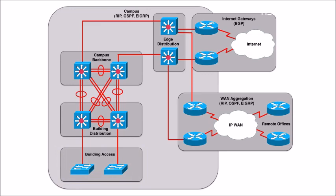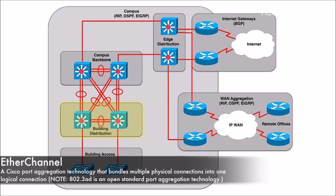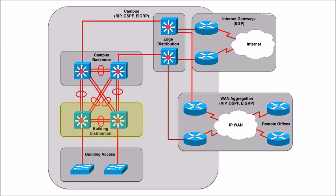These building access switches connect up to a building distribution layer, which is also part of the campus network. It acts as an aggregation point for the switches down at the building access layer. It's common to have multi-layer switches at the building distribution layer, and these switches might be interconnected with EtherChannels. Notice we have a couple of connections between our building distribution layer switches — that oval represents an EtherChannel where we're logically bonding together multiple physical connections into one logical connection, giving us more throughput and load balancing.